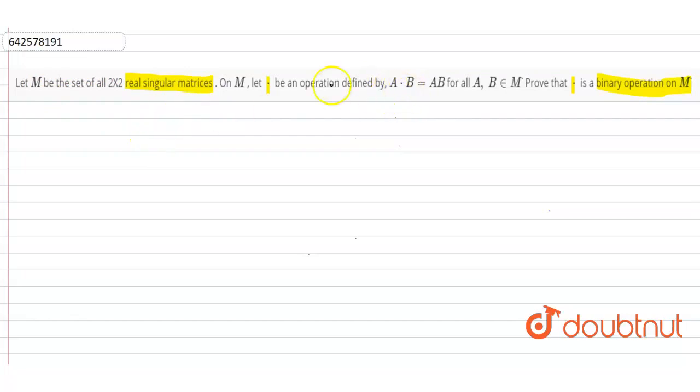So A and B both belong to M. A belongs to M. So what is a singular matrix? Singular matrix is a matrix whose determinant is 0. And B is a singular matrix. Again, it means that B, determinant of B is again equal to 0.